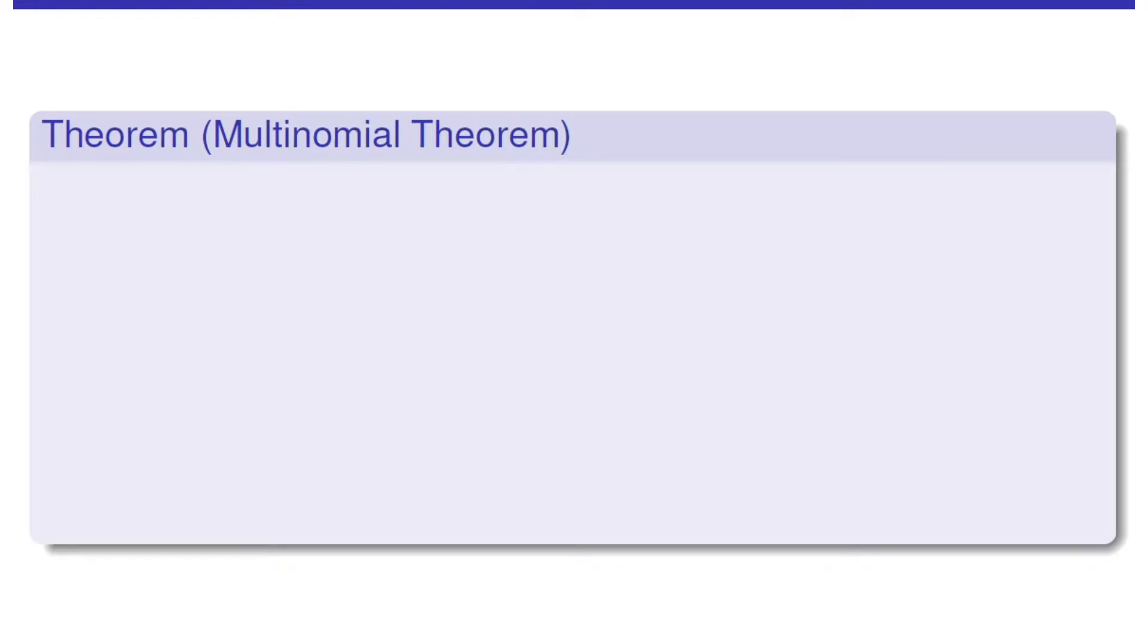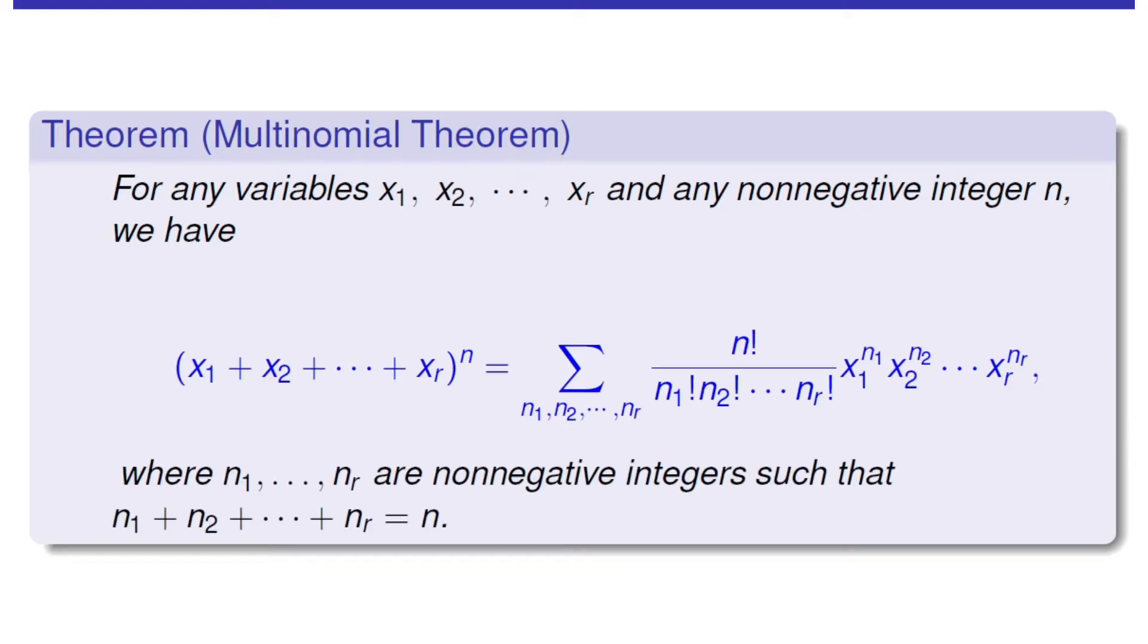Before we do the problem, we want to introduce this multinomial theorem. It states like following. For any variables x1 through xr and any non-negative integer n, we have this formula, this equation.